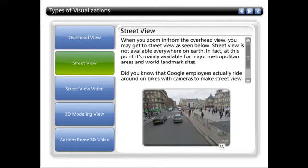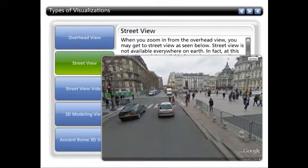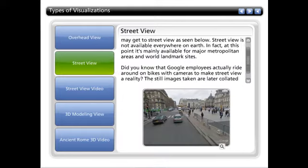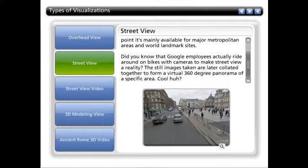When you zoom in from the overhead view, you may get to Street View as seen below. Street View is not available everywhere on Earth — at this point it's mainly available from major metropolitan areas and world landmark sites. Did you know that Google employees actually ride around on bikes with cameras to make Street View a reality?